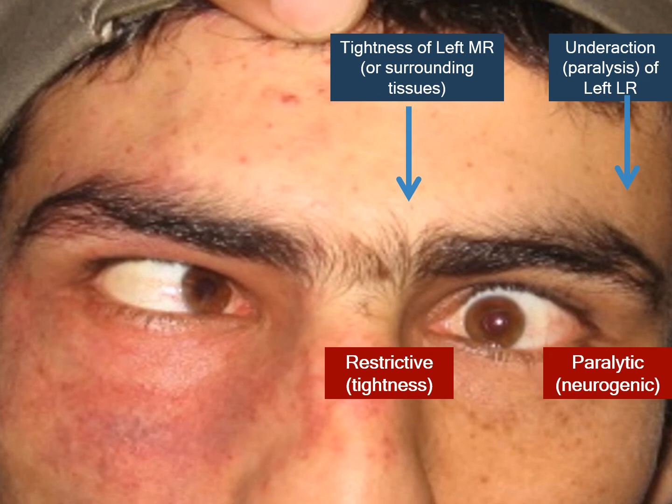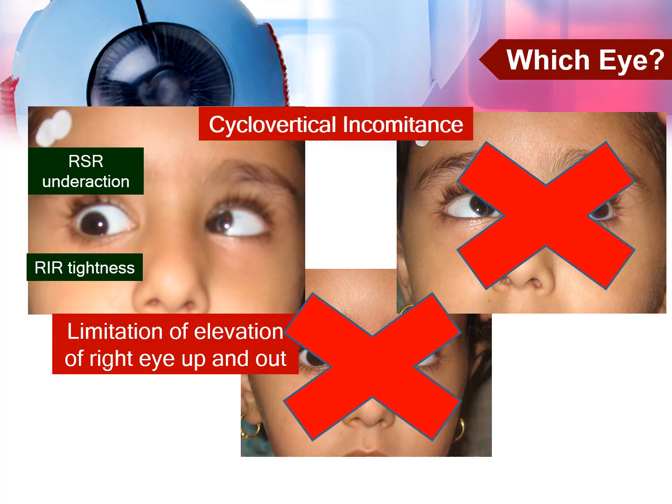In this gentleman with limitation of abduction of the left eye — though we know the left eye is the affected eye — one would need to know whether the limitation is caused by a left lateral rectus under action or paresis, or by tightness of the left medial rectus and surrounding soft tissues limiting abduction. In cyclo-vertical incomitance, things might be a bit more complicated.